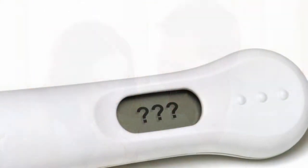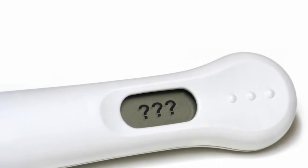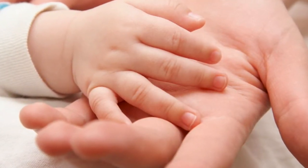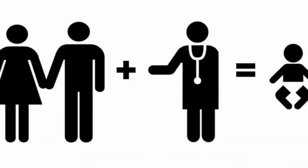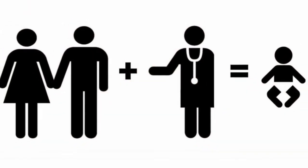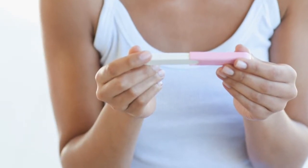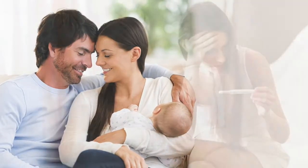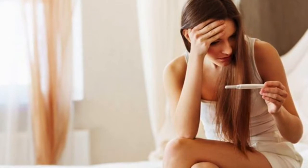During orgasm, a man ejaculates and releases semen through the penis. The seminal fluid helps transport the sperm during ejaculation. The seminal fluid has sugar in it, which is an energy source for sperm. Abnormal semen is responsible for about 70% of all cases of male infertility.